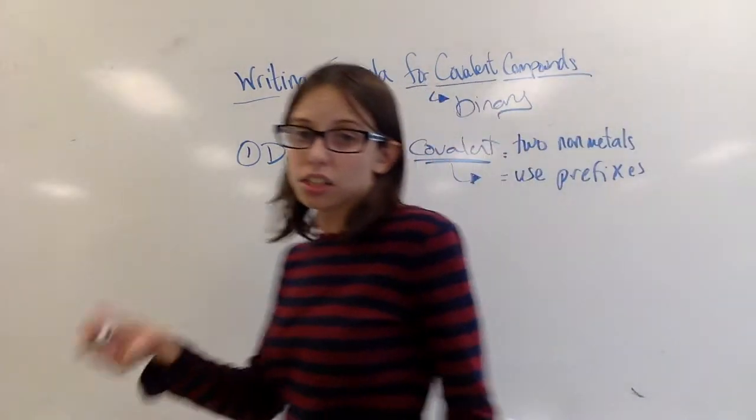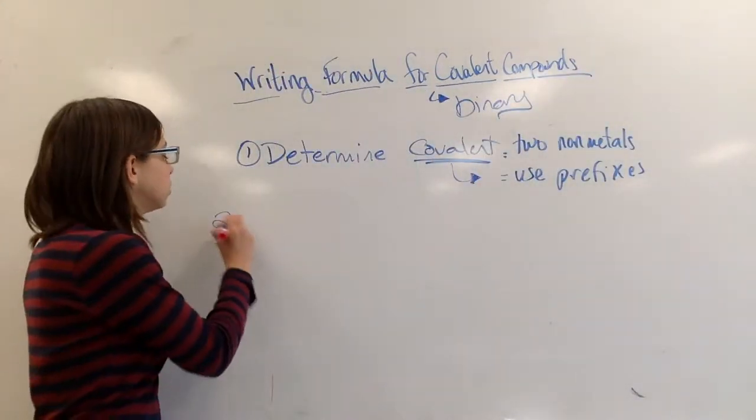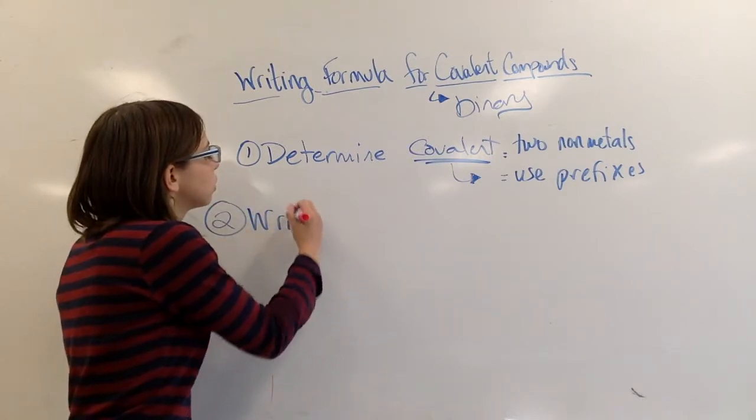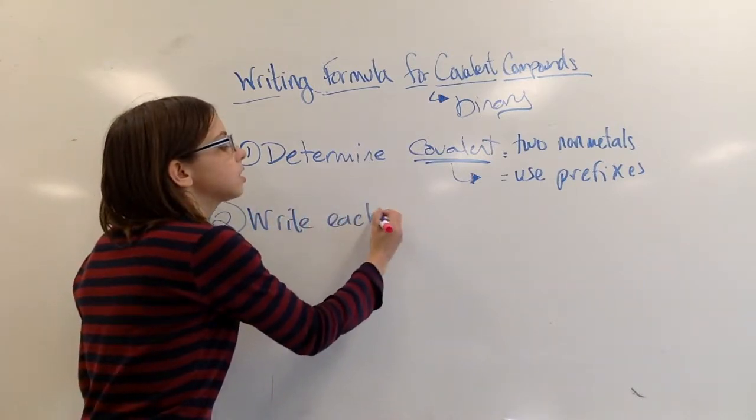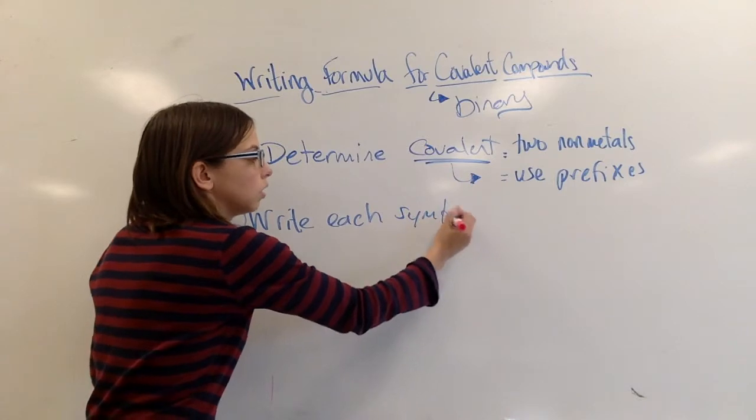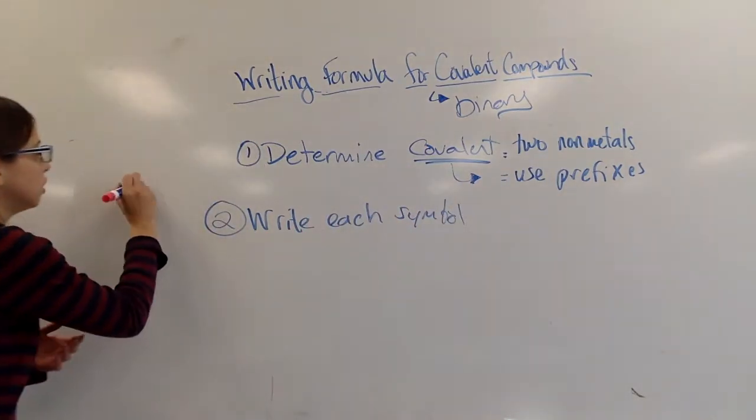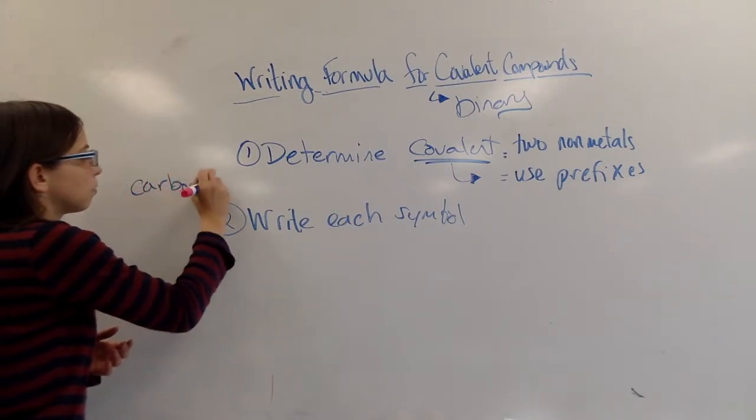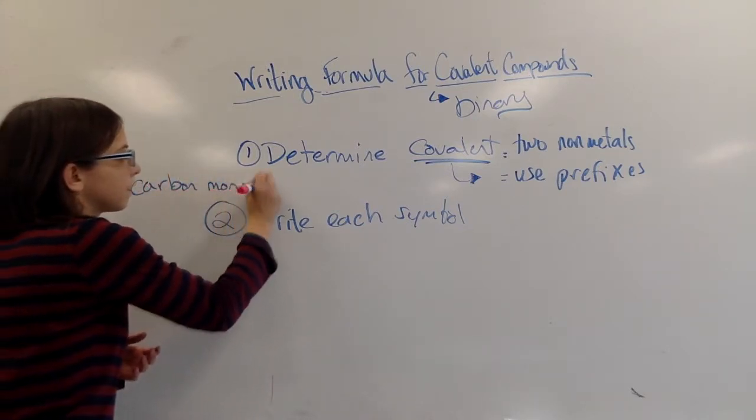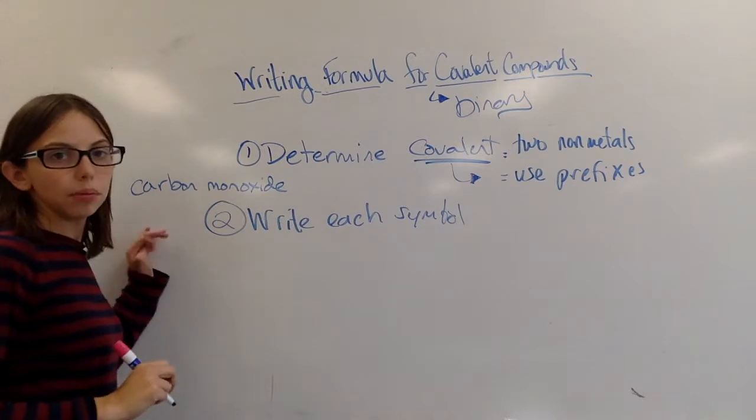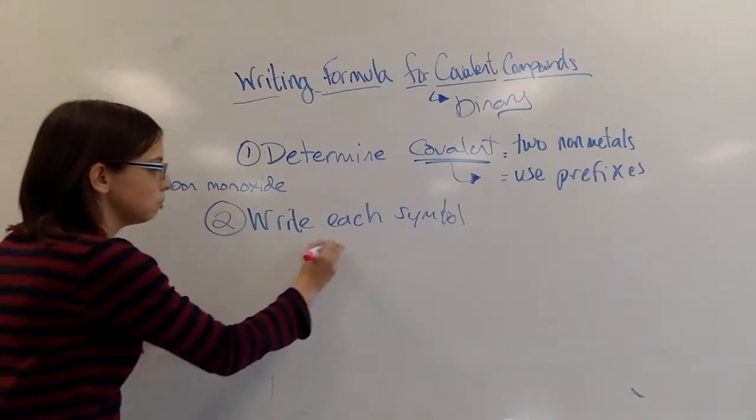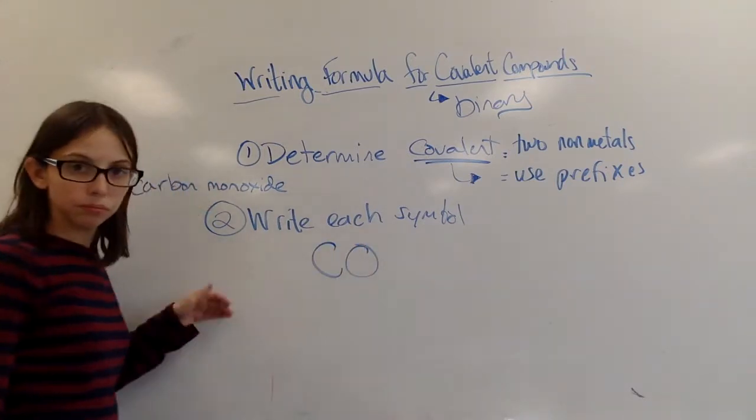All right. So once I've determined it's covalent, it's pretty straightforward from there. Two, you'll write each symbol, and you always write them in the order that they were given to you. So if I have this name right here, carbon monoxide, my symbols would be C and O.